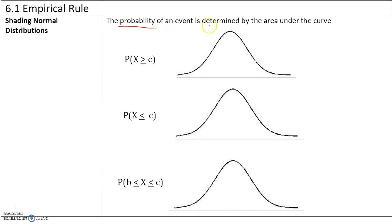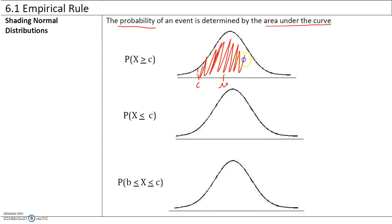The probability of an event is determined by the area under the curve. If we have a curve with mean mu, the probability that x is greater than or equal to a value c is given by the area under the curve to the right of c.